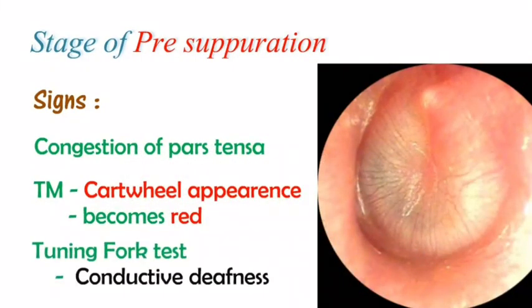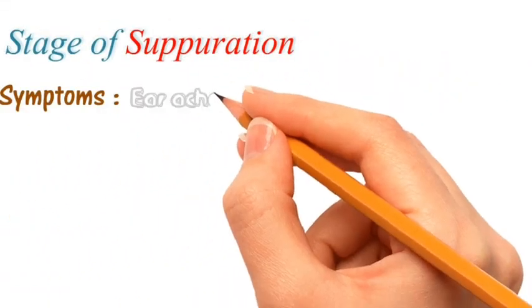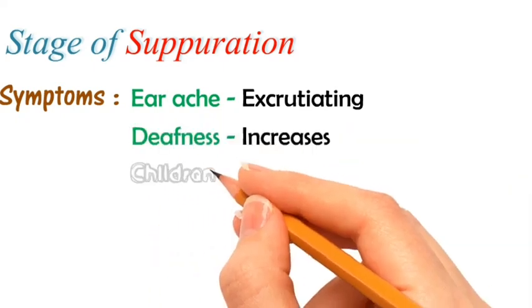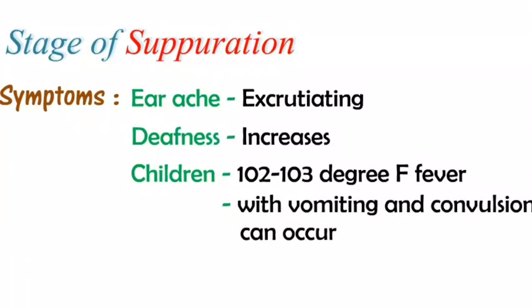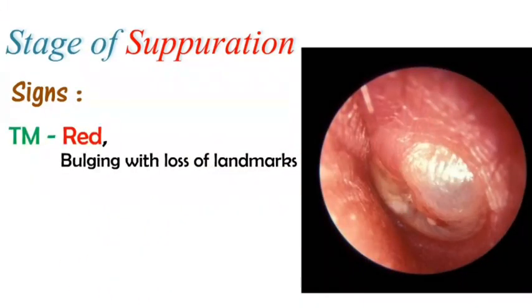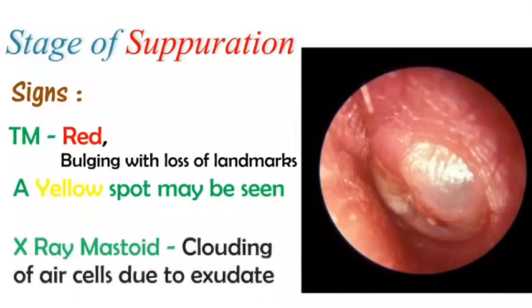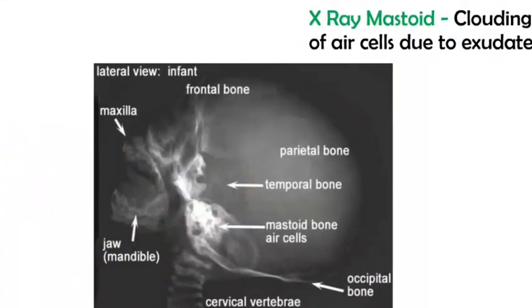Tuning fork test reveals conductive hearing loss. In the suppurative stage, there will be excruciating earache. Deafness increases and children may have high-degree fever with vomiting and convulsions. The tympanic membrane appears red and bulging with loss of landmarks. A yellow spot may be seen, and X-ray of the mastoid shows clouding of air cells due to exudate.